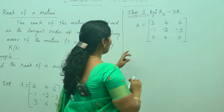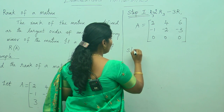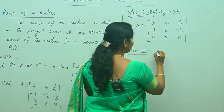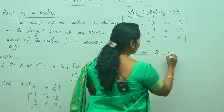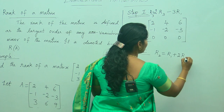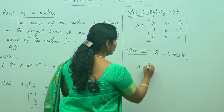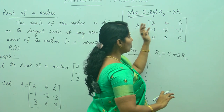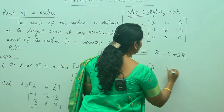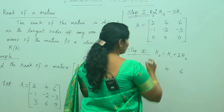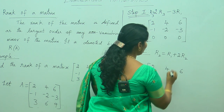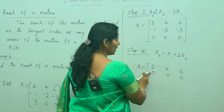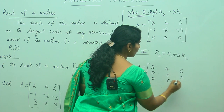Step 2: from step 1, we need to make the first element of the second row zero. We apply R2 = R1 plus 2R2. The first row and the third row are written as they are — you should not disturb them. Only the second row changes: 2 minus 2 gives zero, 4 minus 4 gives zero, 6 minus 6 gives zero. The third row remains [0, 0, 0].